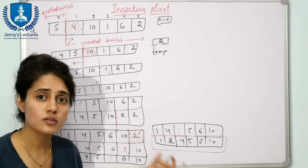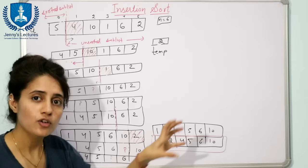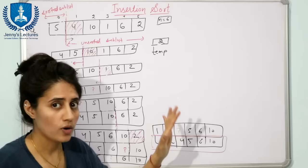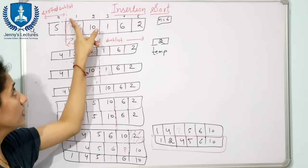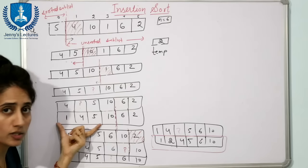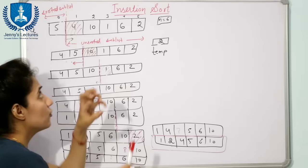Why is this known as insertion sort? As you have seen from this working principle, we take one value from the unsorted sublist and insert that value into the sorted sublist. That is why it is known as insertion sort. Two loops are required: one incremented from 1 to n (to traverse unsorted elements) and one decremented (for the comparison to find the proper place).